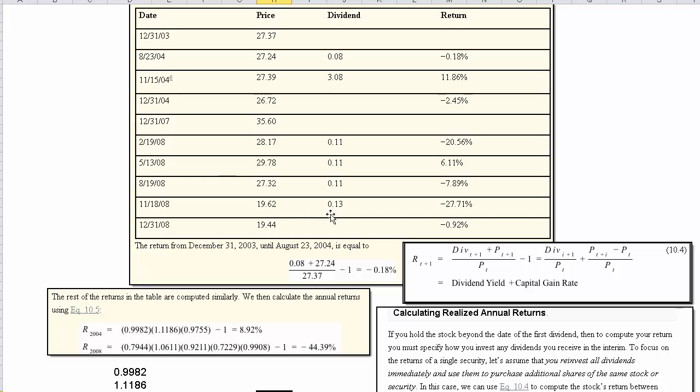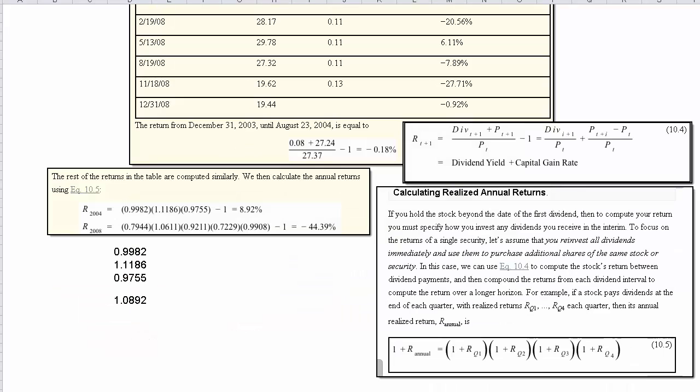There were three dividends and then you also do the end of year calculation to find the total return. Let me slide down again. This is equation 10.5 that we use to multiply the various returns through the various periods.